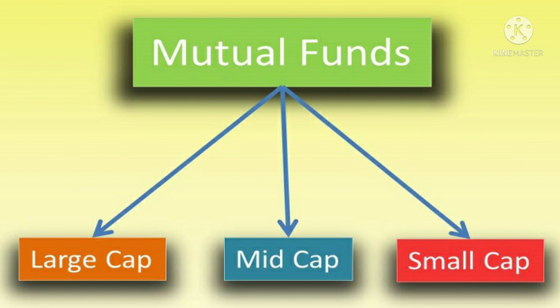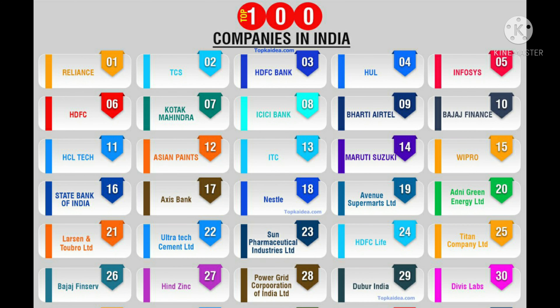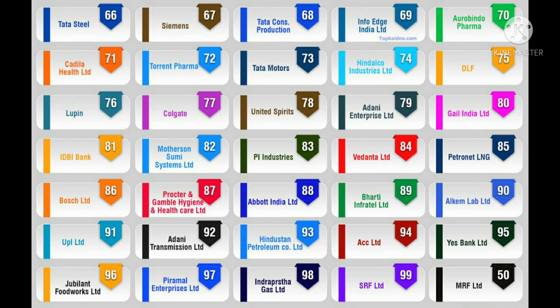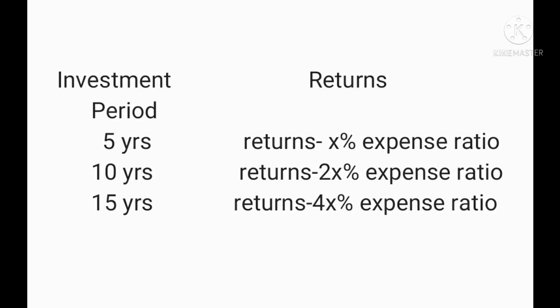Large cap mutual fund schemes invest in large cap companies that have market caps of Rs. 20,000 crore or more — these are the top 100 companies of India. Even if there are many large cap mutual fund schemes available in the market, they are all going to invest in these top 100 Indian companies only. If you select two large cap schemes, there are high chances your money ends up in the same set of companies. So it is better to choose just one good large cap mutual fund with a very low expense ratio compared to its peers, because expense ratio has more impact on your returns the longer you invest.